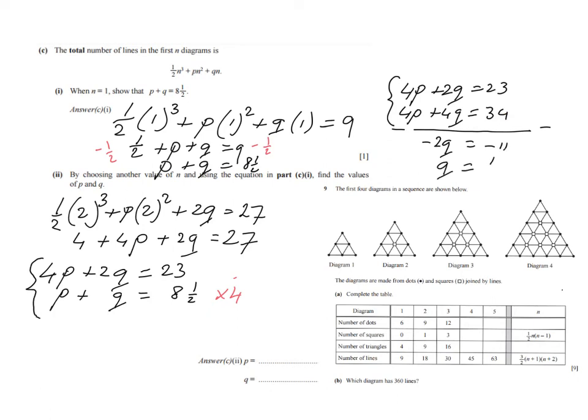So q will be 11 over 2. Minus 11 over minus 2, which is 5.5. So that is the value of q. That's great. That is one variable. And then I substitute that value in one of my equations. Let's take the easier one. p plus q is 8.5. And if I substitute it in that equation, I will find my other unknown.